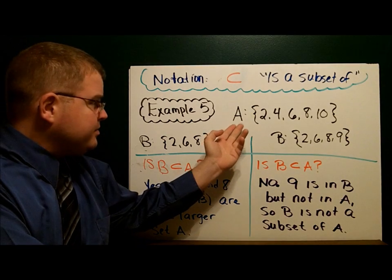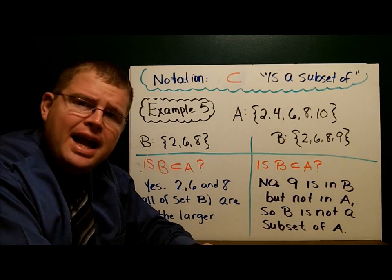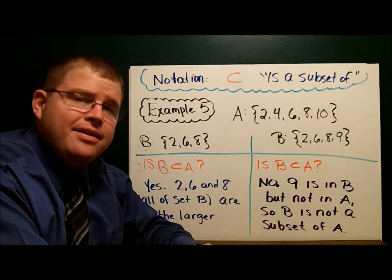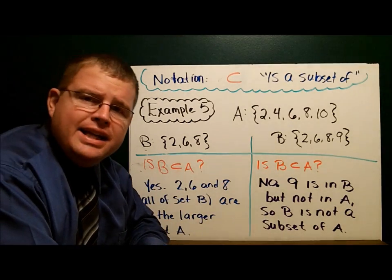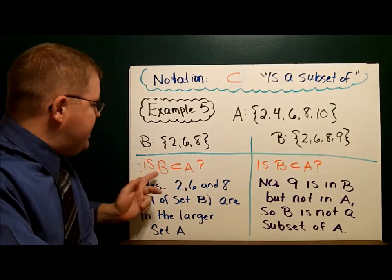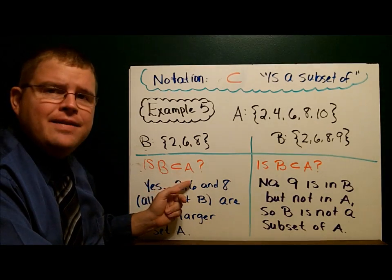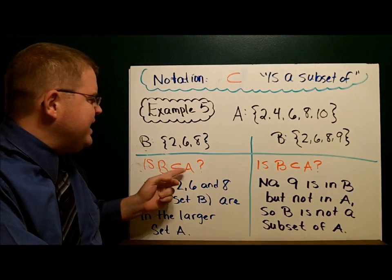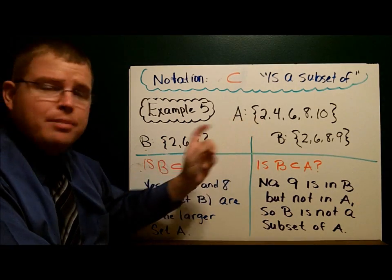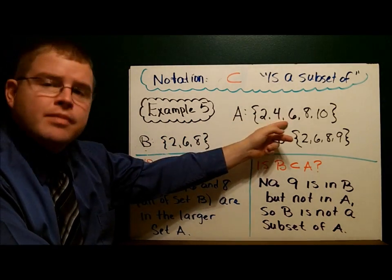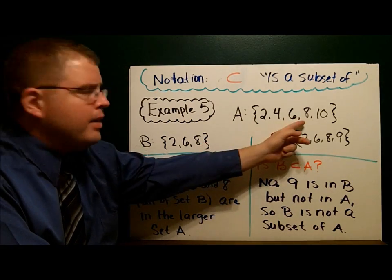Example five gives us set A: {2, 4, 6, 8, 10}. And they say set B is {2, 6, 8}. Is B a subset of A? Is B contained in A? Well, let's check. Two, yup. Six, yup. Eight, yup, it's there.